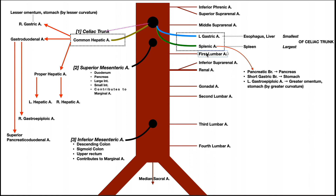Below the first lumbar artery, the renal artery branches off the abdominal aorta to supply the kidneys — one on each side, since these are paired. Coming off the renal artery is the inferior suprarenal artery, which is the third artery supplying the suprarenal or adrenal gland on each side.